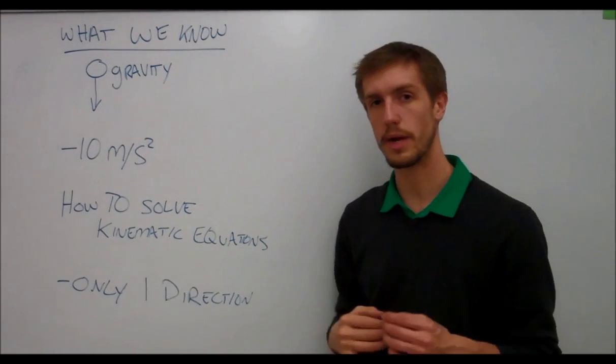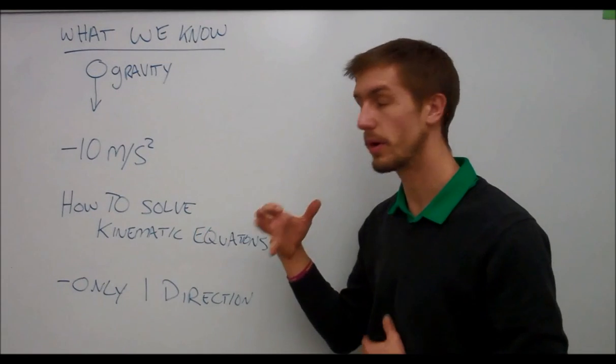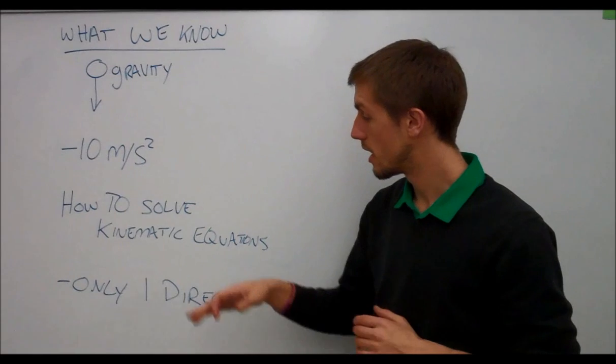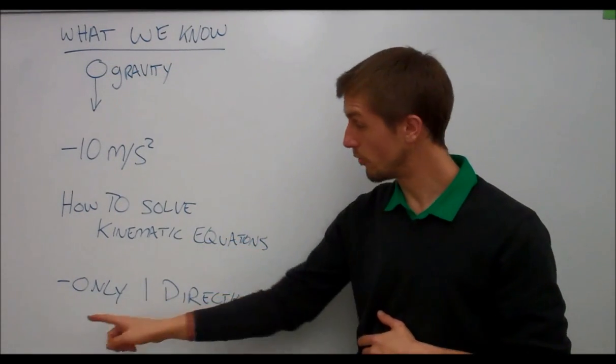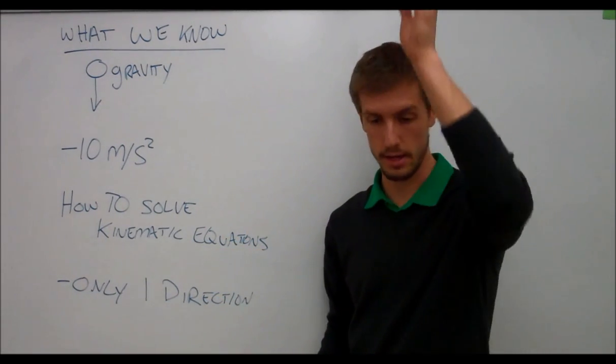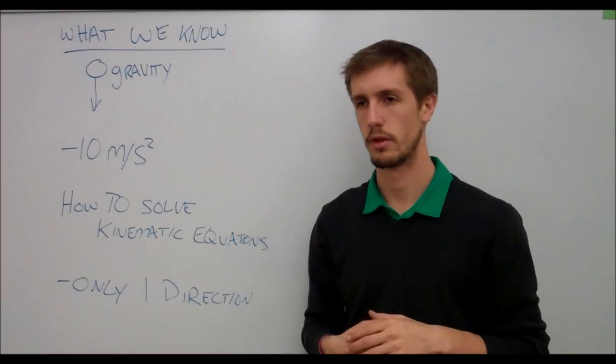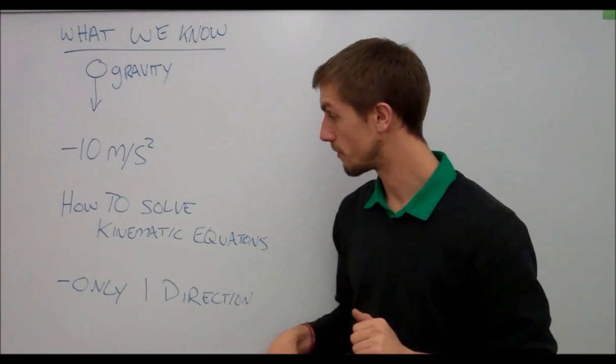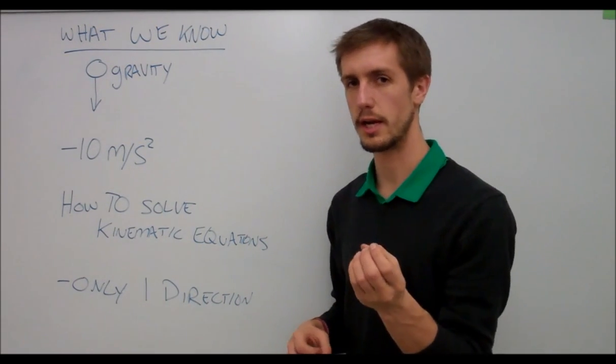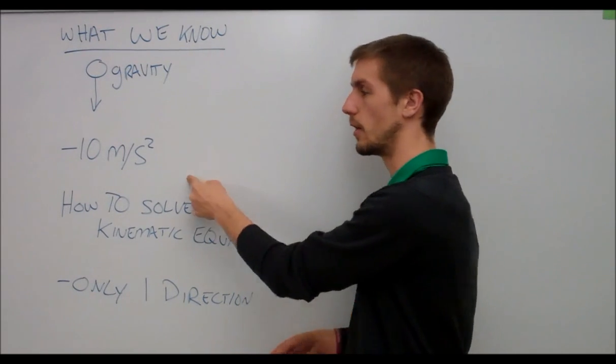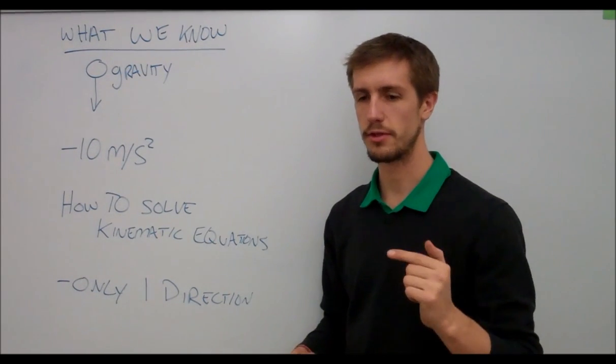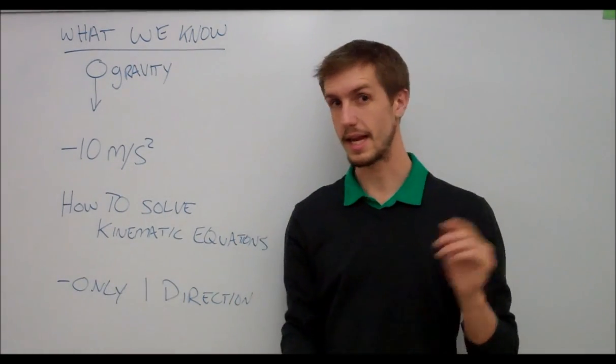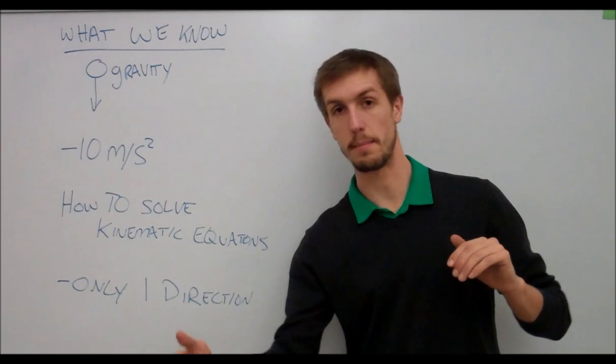We also know how to solve kinematic equations. With some given variables we were able to solve for unknowns, such as the amount of time it should take for our object to fall. But we also only know how to do it in one direction. We only know how to do this with a vertically falling object or with a car on a road where it speeds up or slows down. So what we are going to try and do is relate what we know with two directional motion. Motion of an object that doesn't just go up down and doesn't just go side side but goes in both.